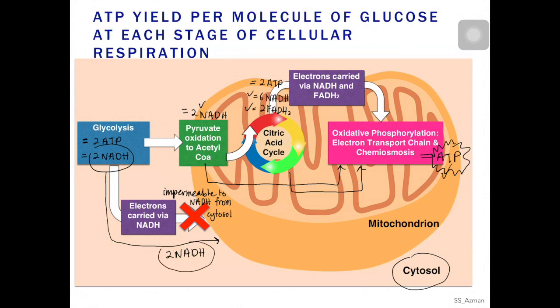We know that these two NADH carry electrons, and these electrons are important for ATP generation in oxidative phosphorylation. So instead of transporting NADH from the cytosol into the mitochondria, what happens is only the electrons will cross the mitochondrial membrane. Inside the mitochondria, they have two types of internal shuttle, and this internal shuttle is the one that will accept the electrons.